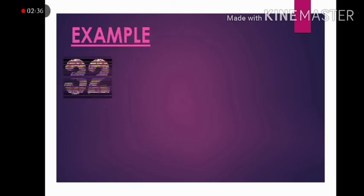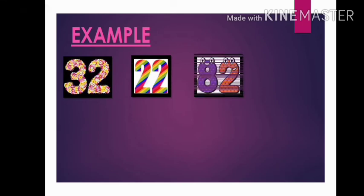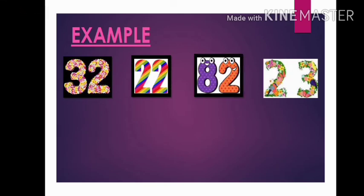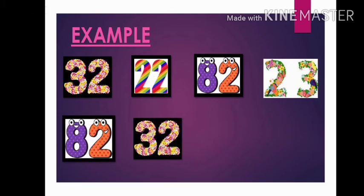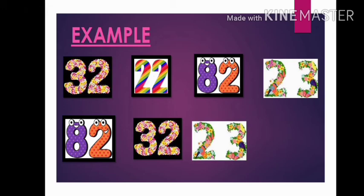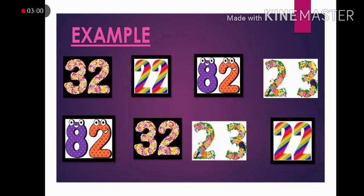Let us take one more example. Let us take some numbers 32, 22, 82 and 23. Let us arrange these numbers from big to small. So the biggest number in this will be 82, 32, 23 and 22 which shows from big to small.